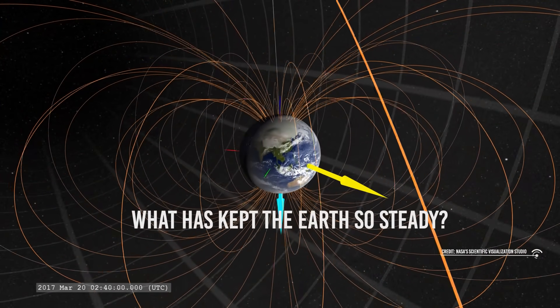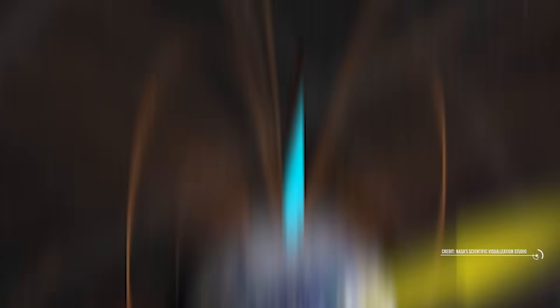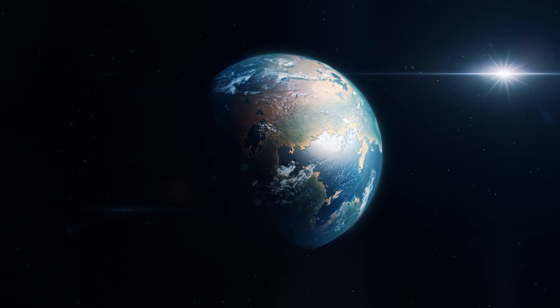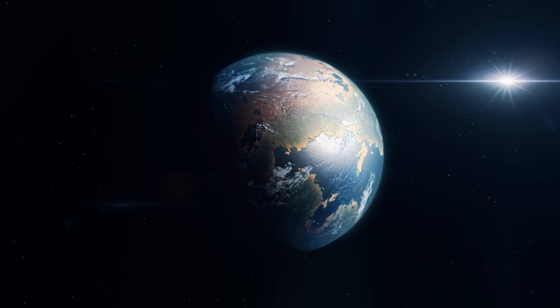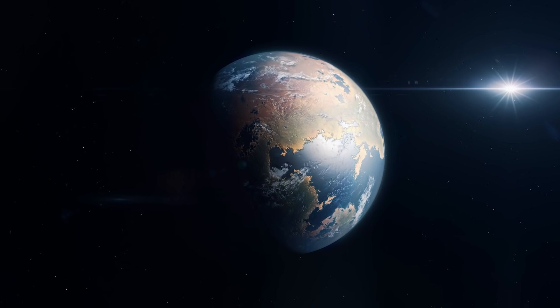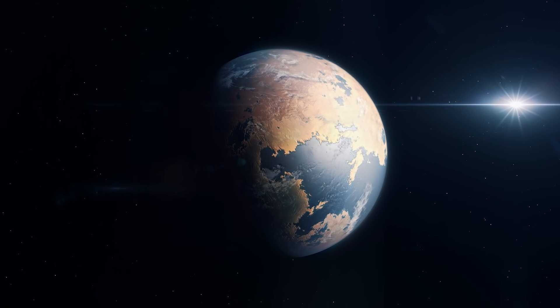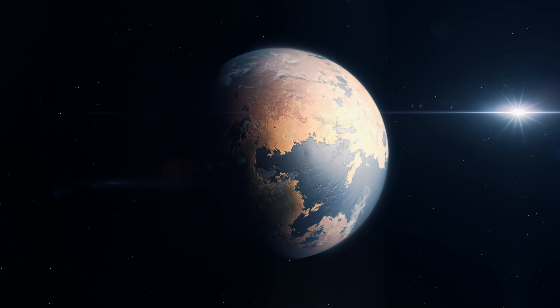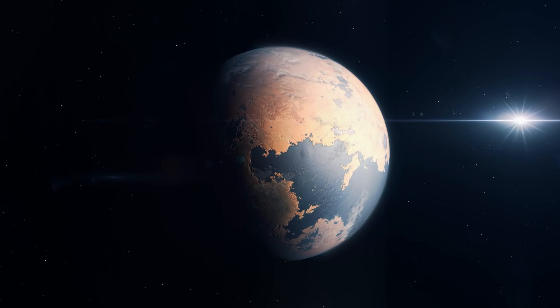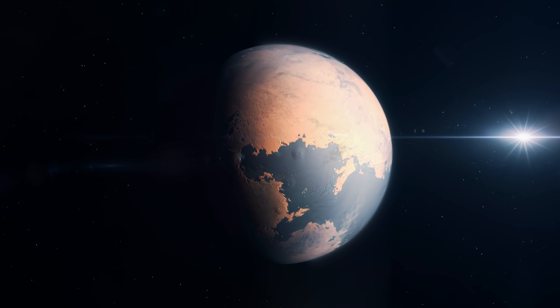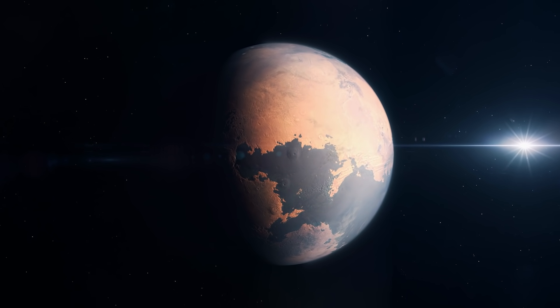What has kept the Earth so steady? The gravity of our moon. In contrast, Mars only has two tiny moons, which have negligible gravity. Without a stabilizing influence, Mars has gradually tumbled back and forth, its tilt ranging between 0 and 60 degrees over millions of years. Extreme climate changes have resulted. Any Martian life that ever existed would have found the need to continually adapt very challenging.